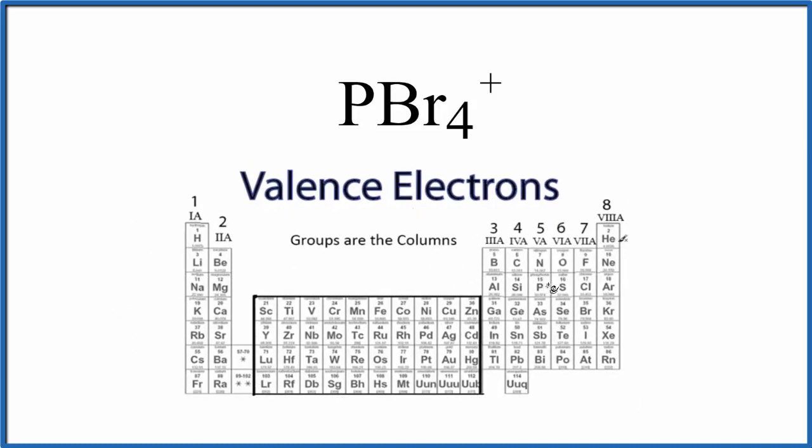If we look for phosphorus, it's right here. It's in group 5A, sometimes called 15, so 5 valence electrons.